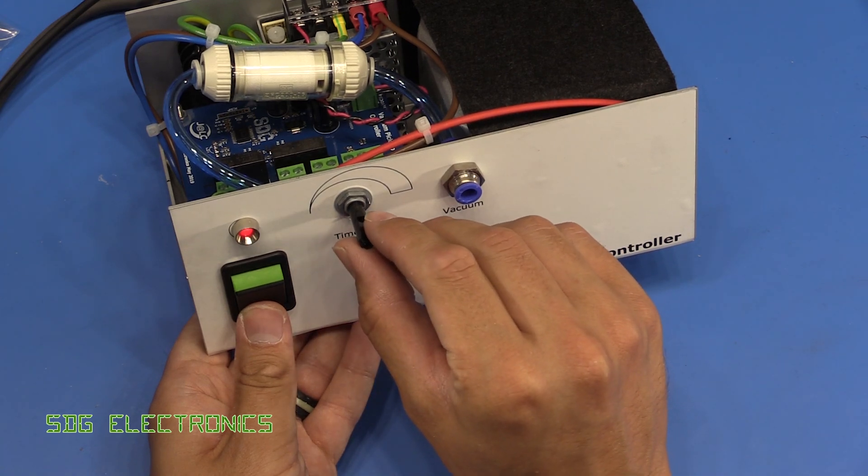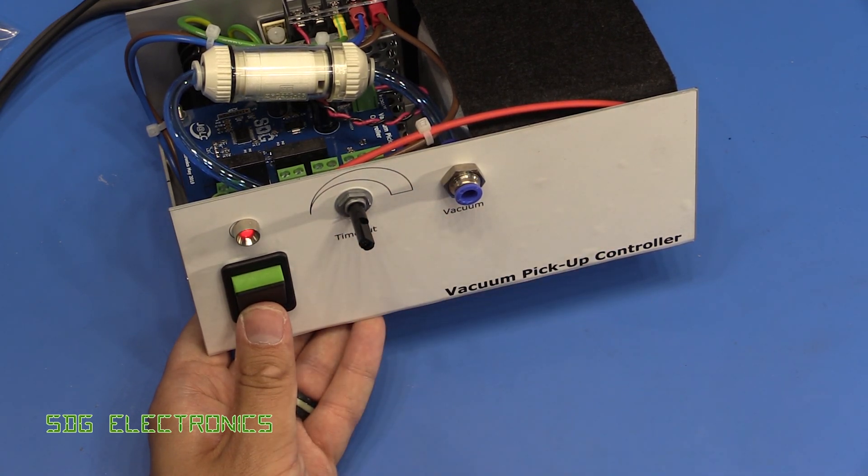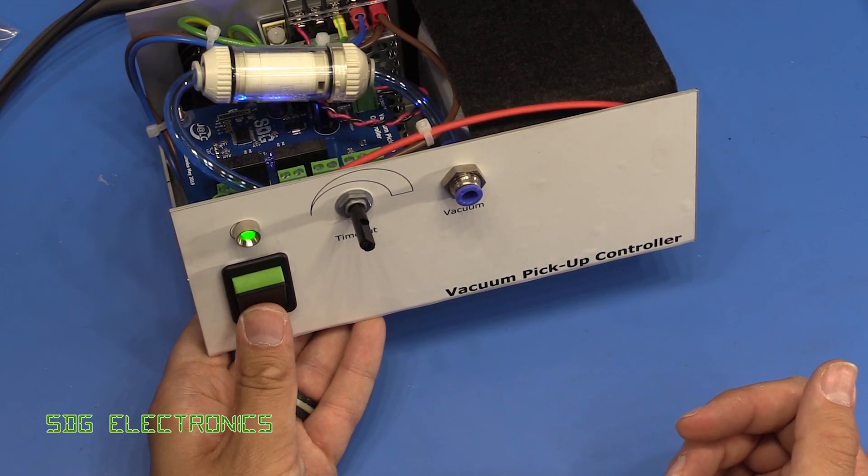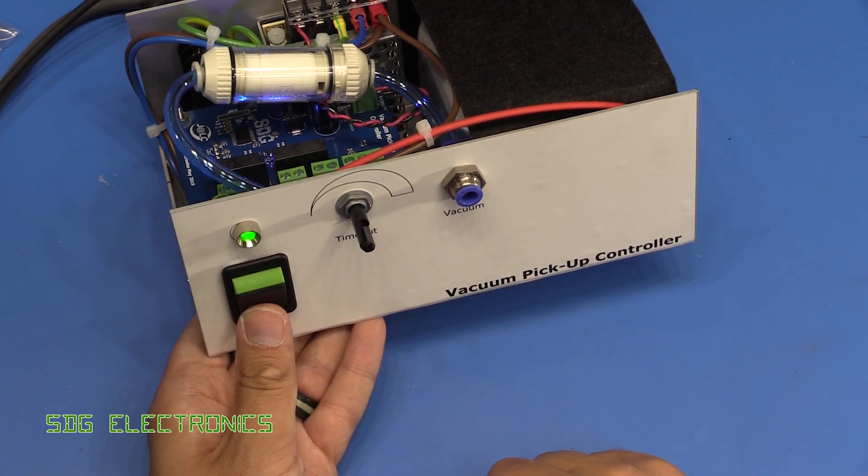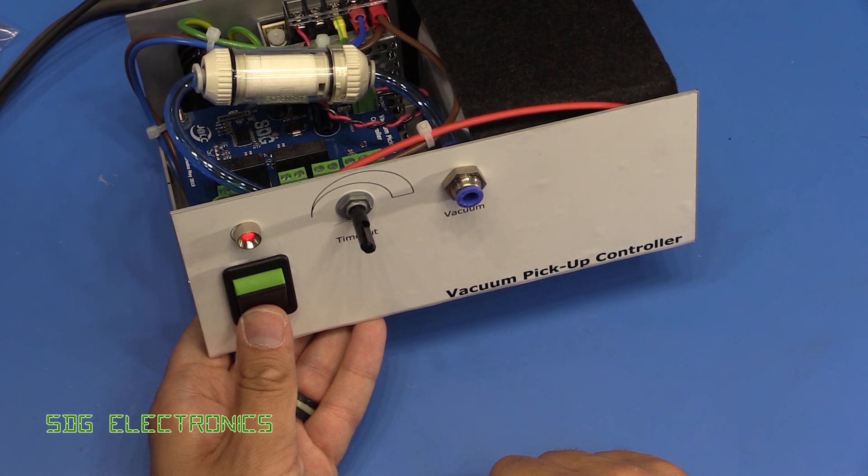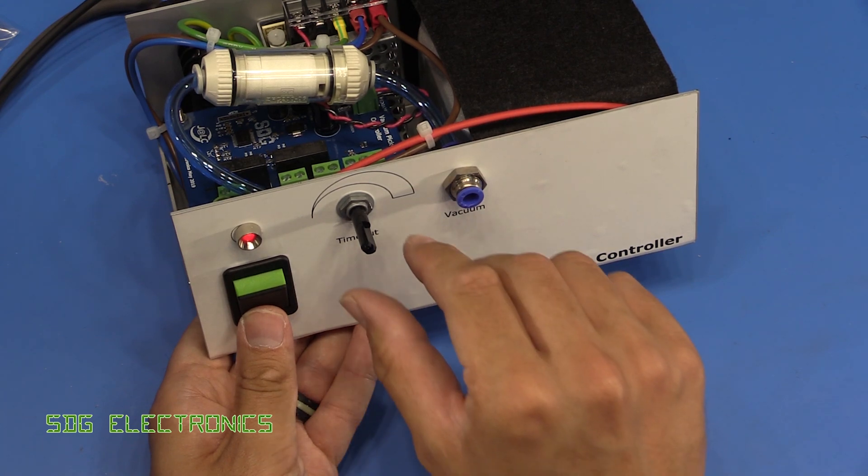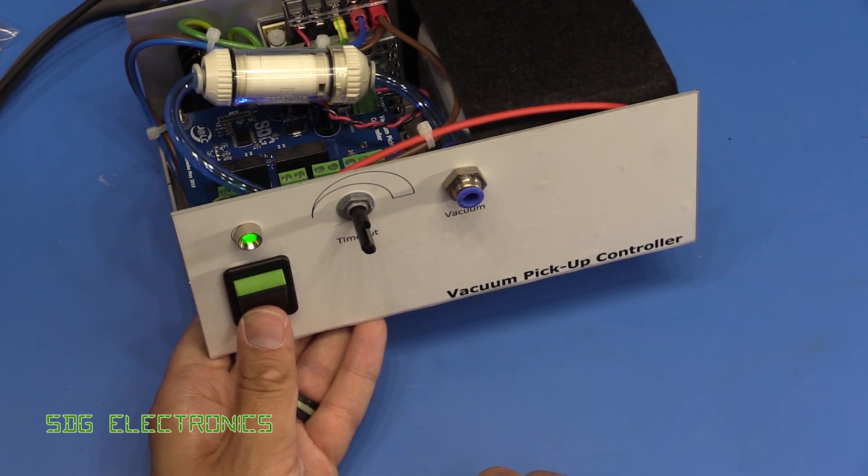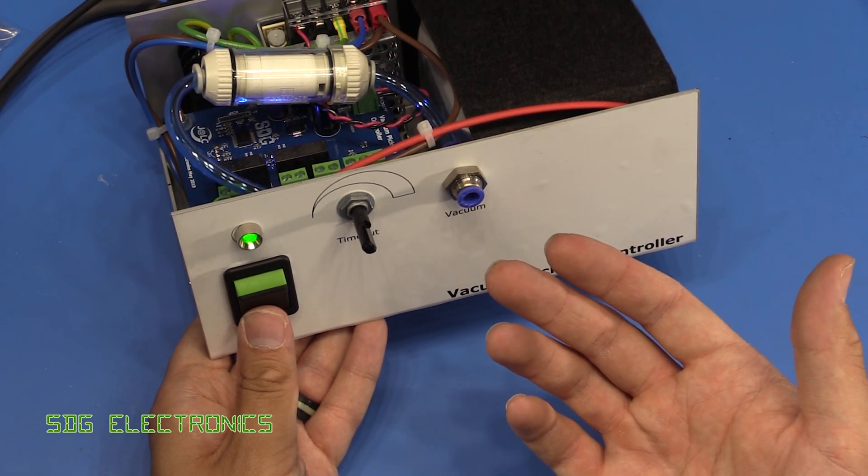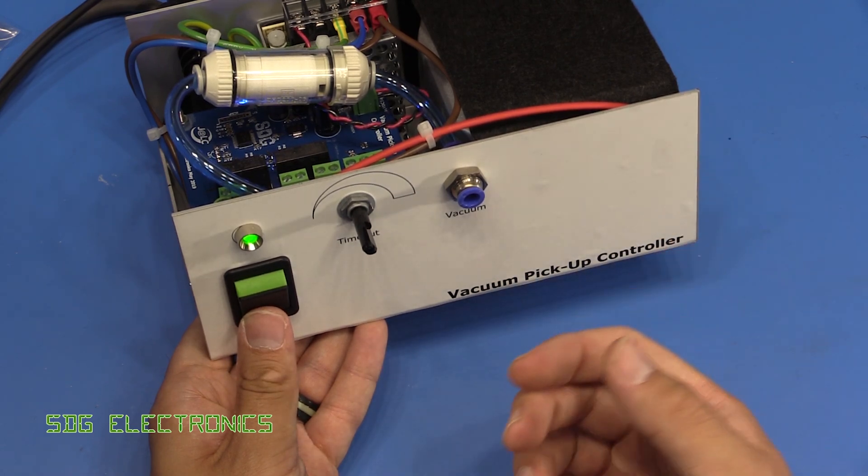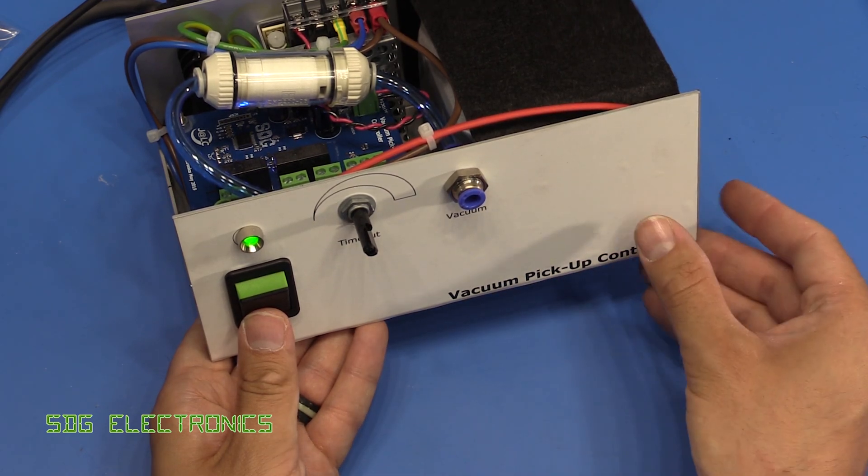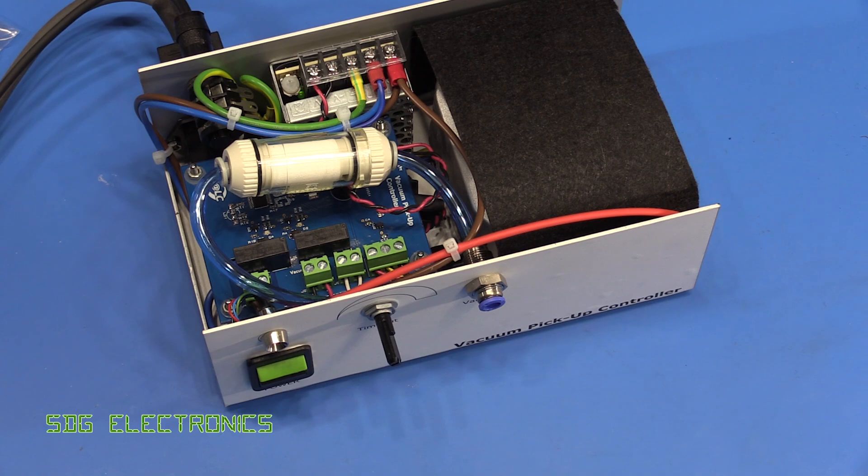Then if I add some time onto the timeout, hopefully the pump should overrun after releasing the pedal. Add a little bit more. There we go. So that seems to work. And if I give it a bit more time, it'll stay on for longer. And the whole time that the pump's on, you can continue pressing the foot pedal. And the solenoid activates, but it keeps the pump running.